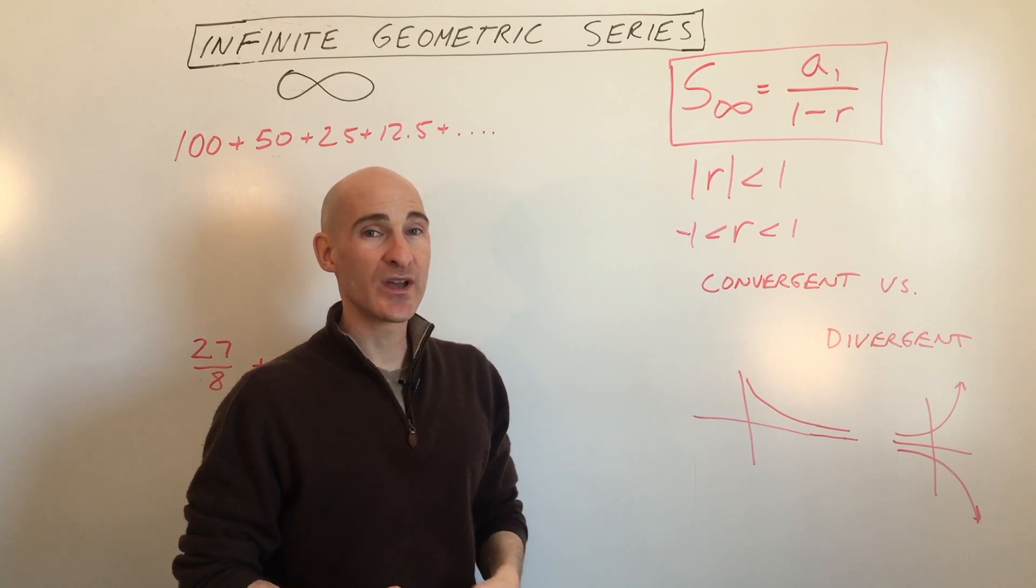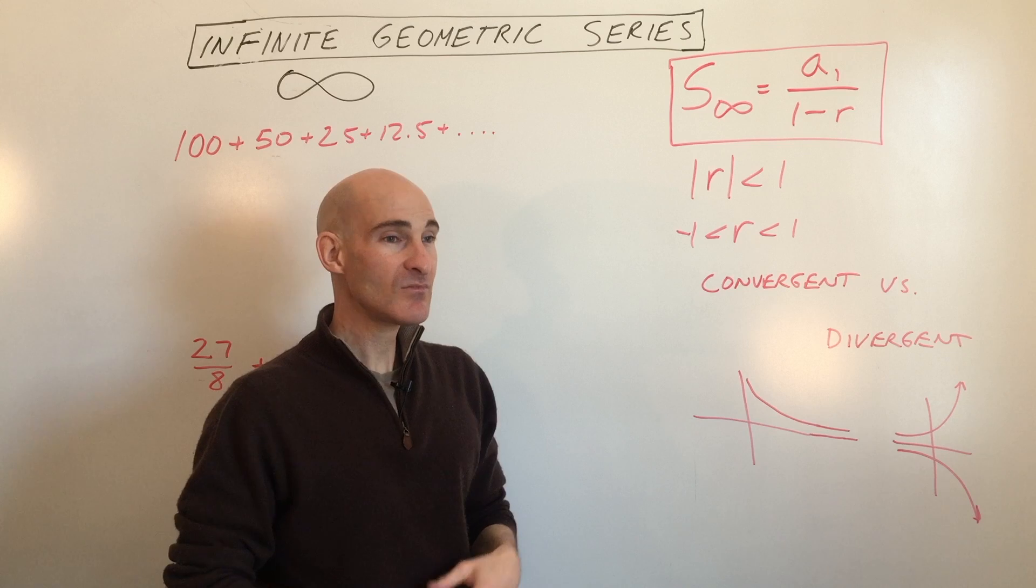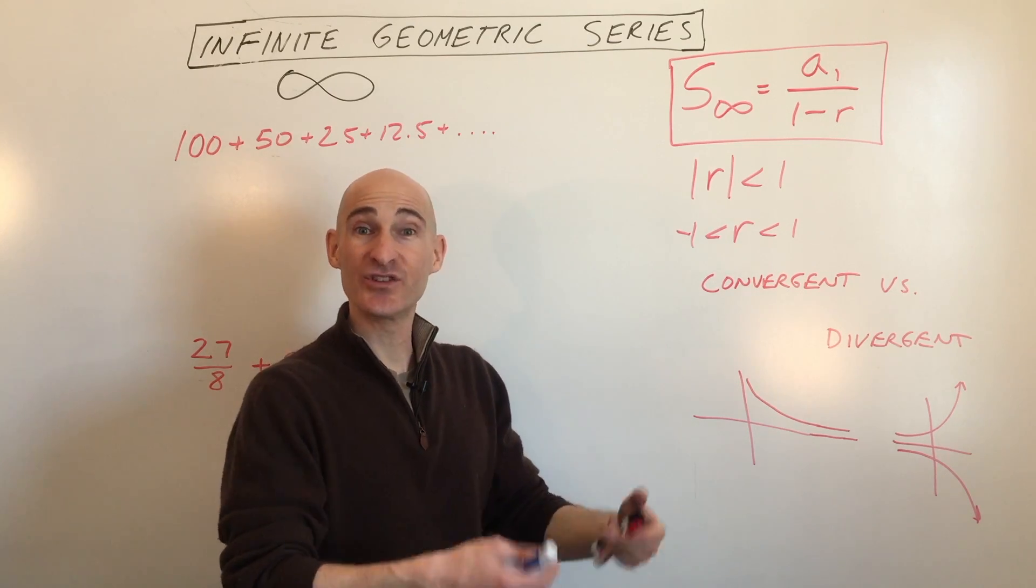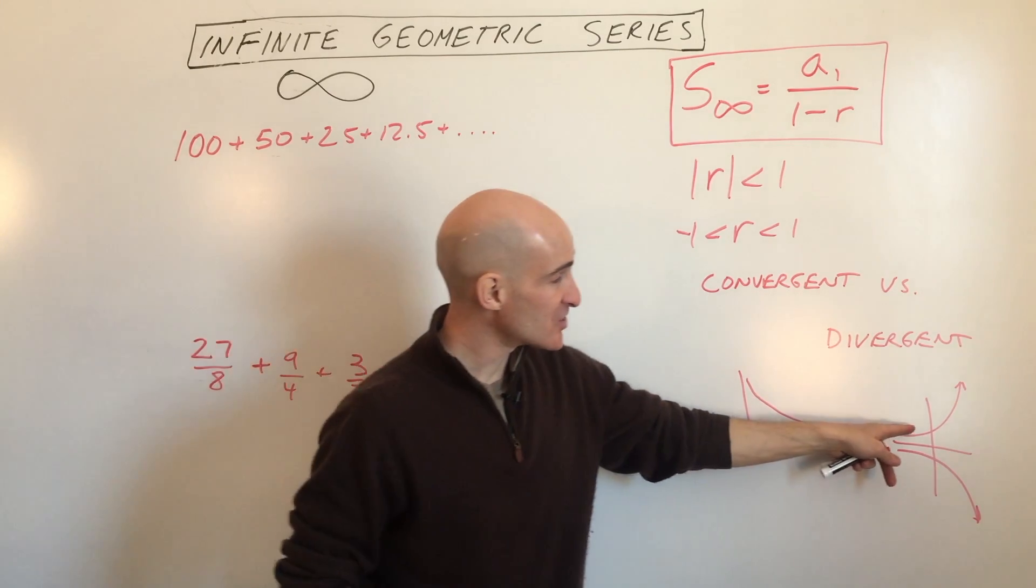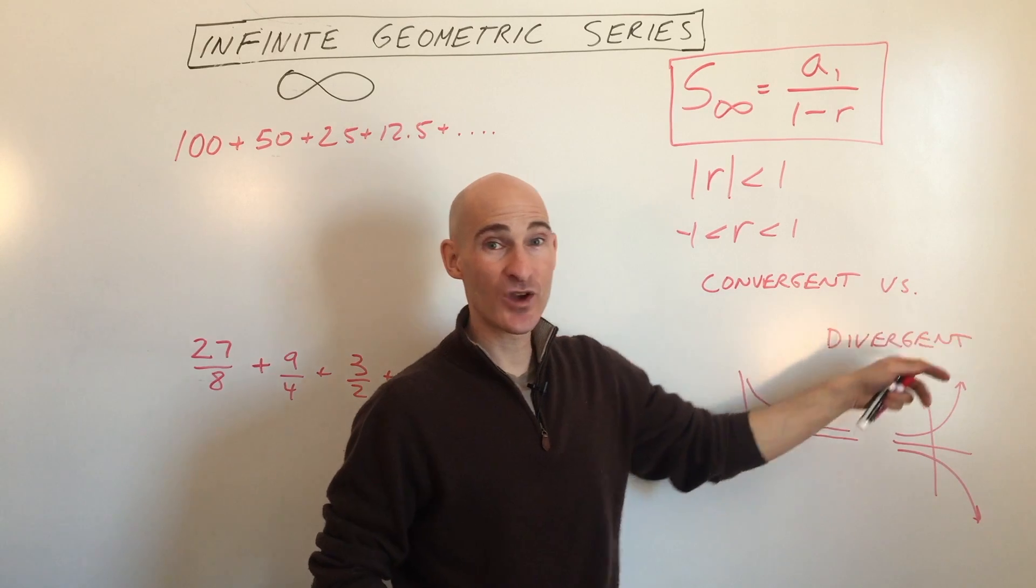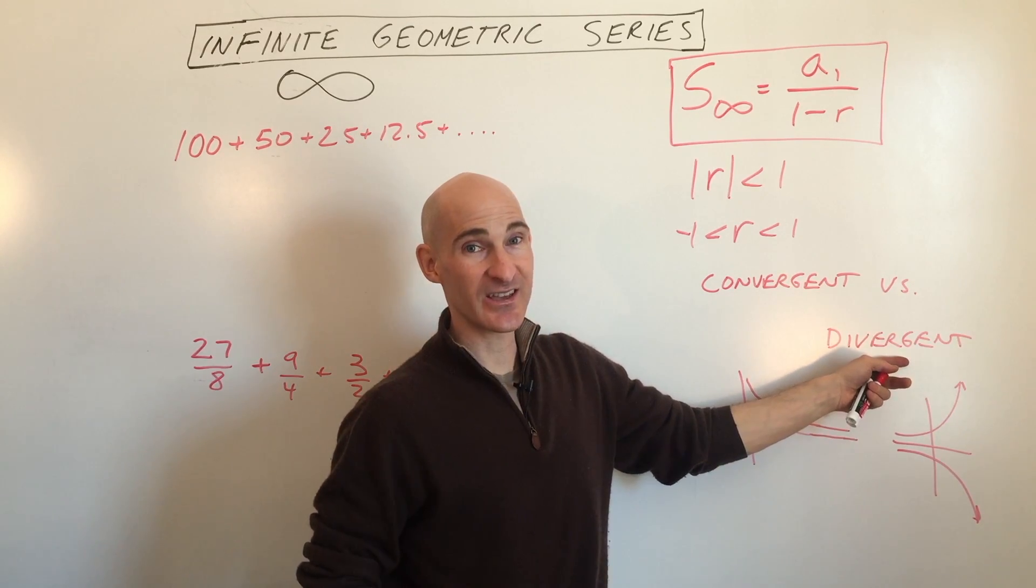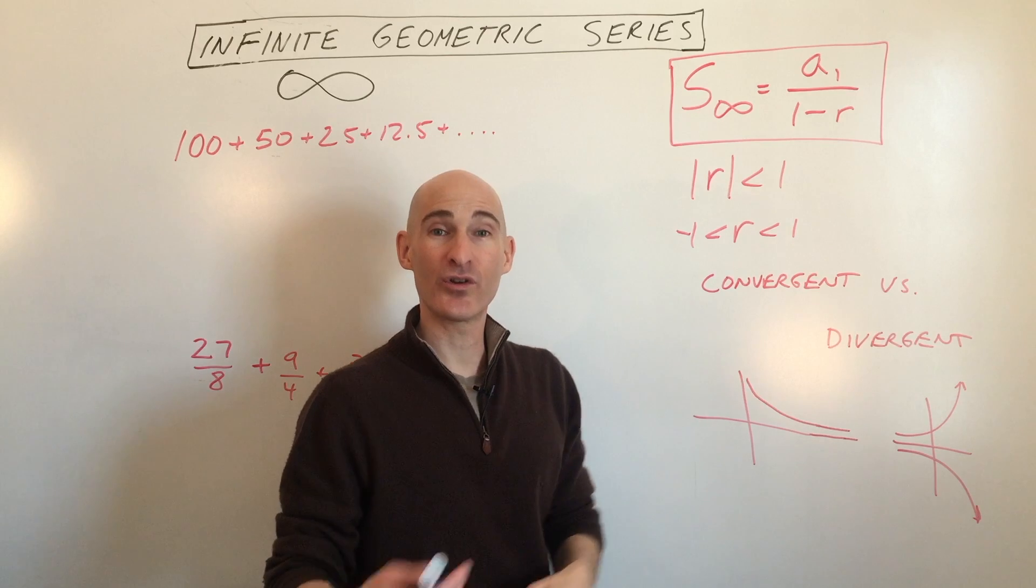Otherwise, if the ratio was 2, like say, for example, it was 4, then 8, then 16, then 32, then 64, you can see it's just going to keep getting larger, larger, larger. That's what we call a divergent series, meaning it's going to infinity or to negative infinity.